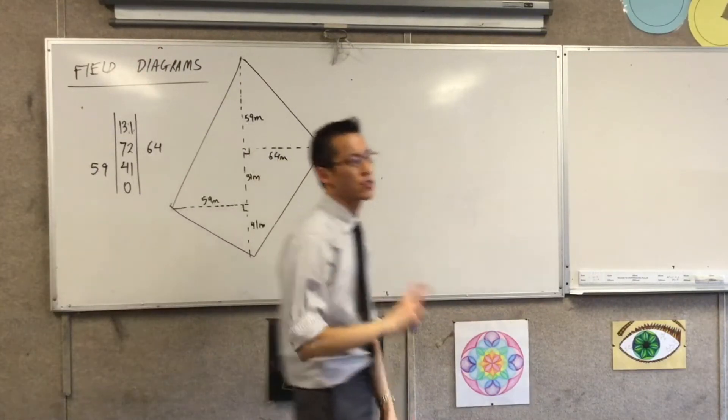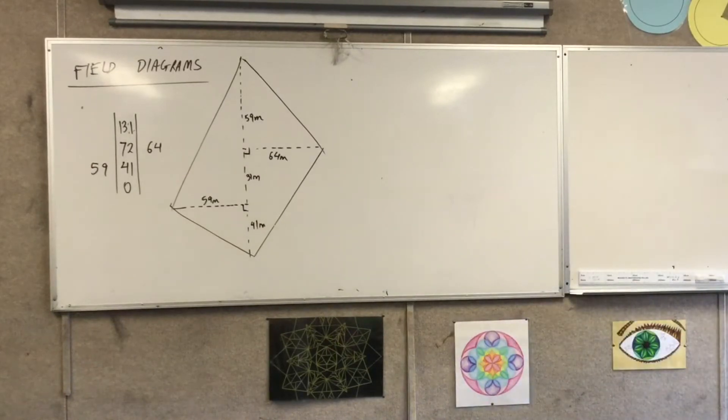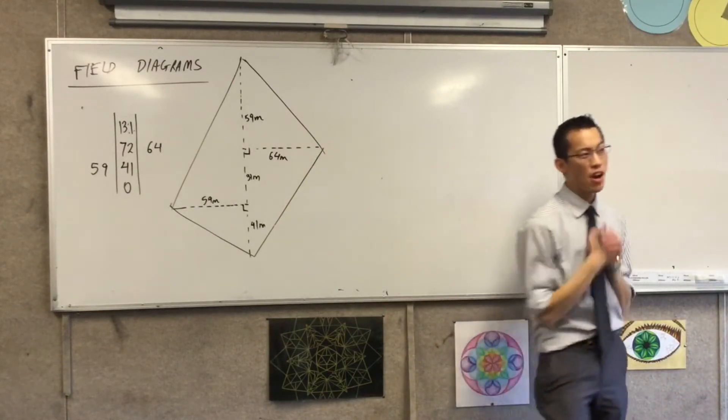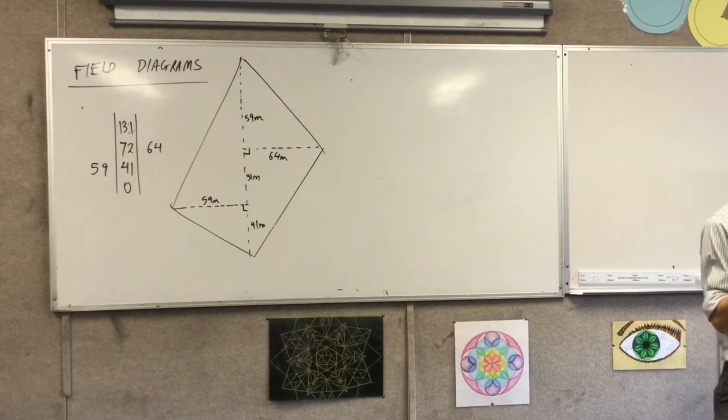Now I've got two questions to ask, perimeter and area, that's all. So let's tackle them one at a time. I've got a whole bunch of lengths here, right? It might be helpful if I gave these things names.